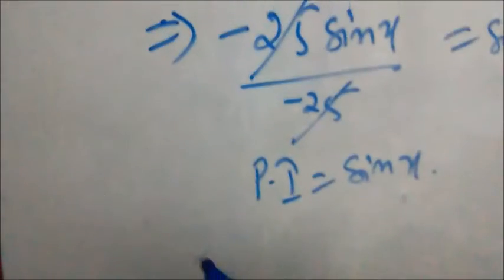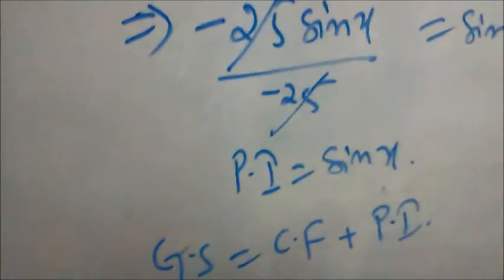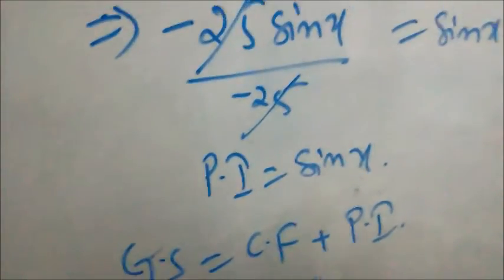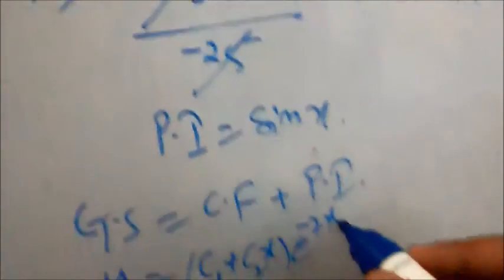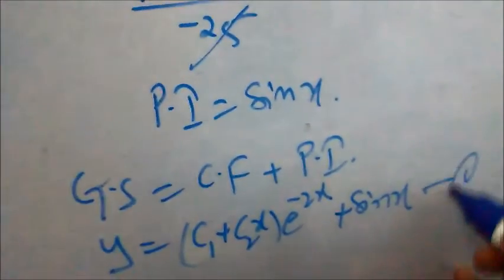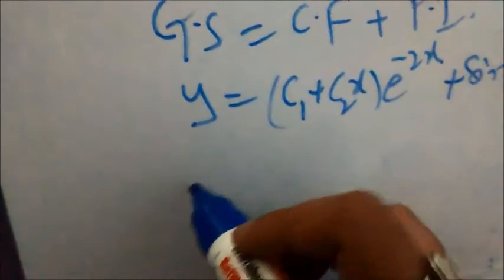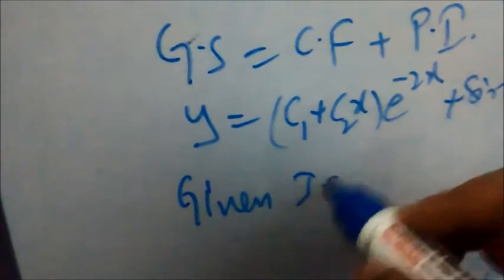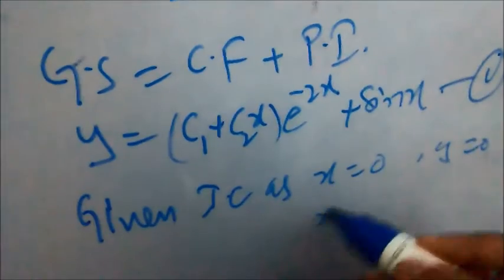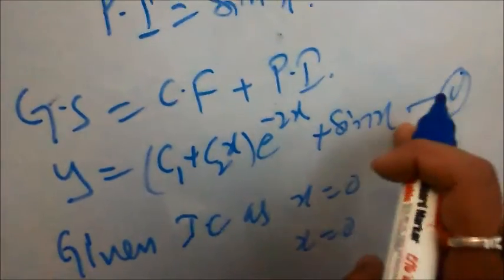The general solution is GS = CF + PI. So y = (c1 + c2·x)·e^(-2x) + sin(x). We take this as equation 1. Now, because initial conditions are given, we need to find the constant values. The initial conditions are: x = 0, y = 0; and x = 0, y' = 0. We need to differentiate equation 1.